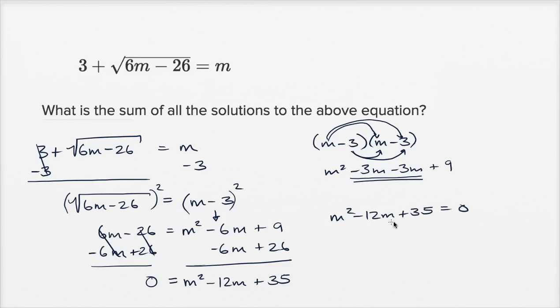And so let's think about the m's that satisfy this. Well, I can factor this if I think about, what two numbers have a product of 35, but if I were to sum them, I get to negative 12. Well, 35, I could think of seven times five, but seven plus five is positive 12. But what about negative seven times negative five? Well, their product's going to be positive 35, and negative seven plus negative five is negative 12. So I could factor this into m minus five times m minus seven is equal to zero.